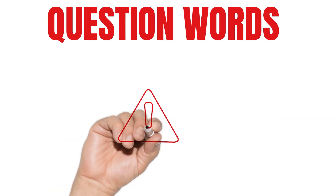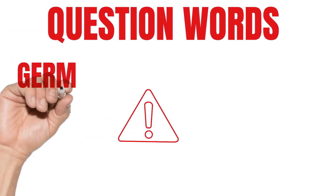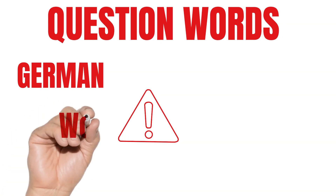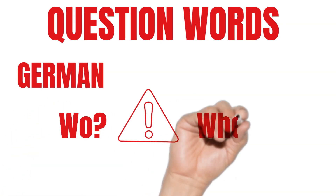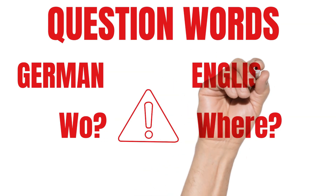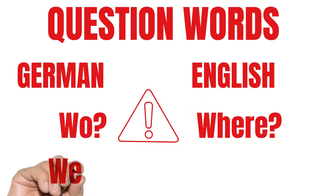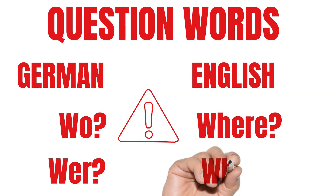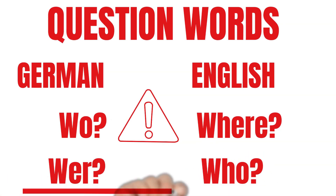We have to be careful because that's a little bit tricky. The German question word "wo" means "where" in English, and the question word "wer" means "who" in English. So we have to be careful that we don't confuse them.